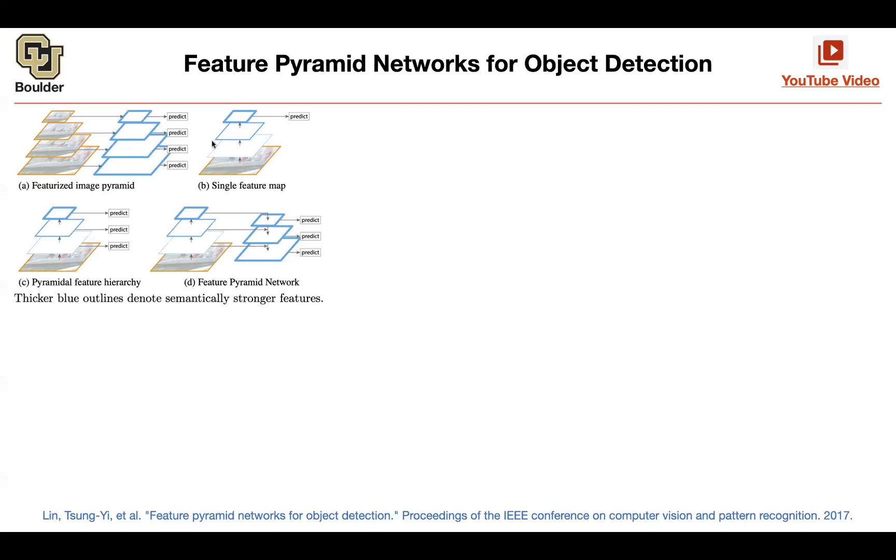Somebody might say there are already feature pyramids coming out of your convolutional neural network. Why don't you put your head of your neural network per each feature map, per each layer? You could do that.